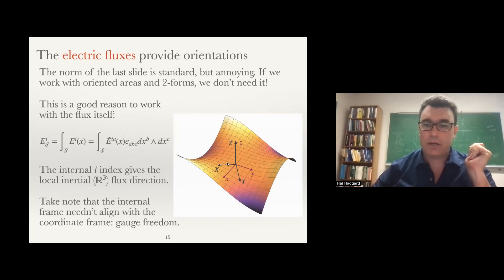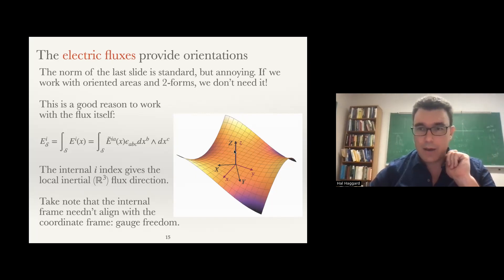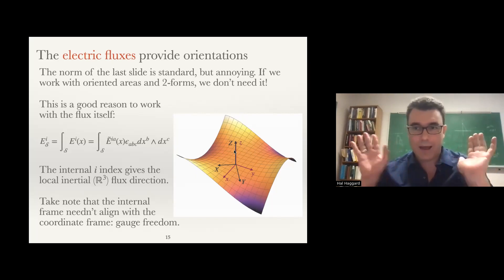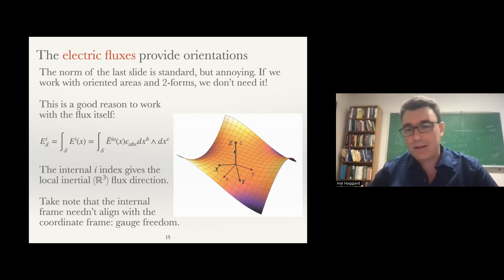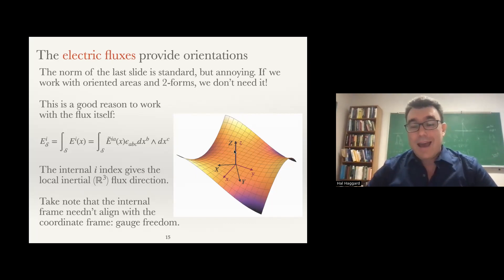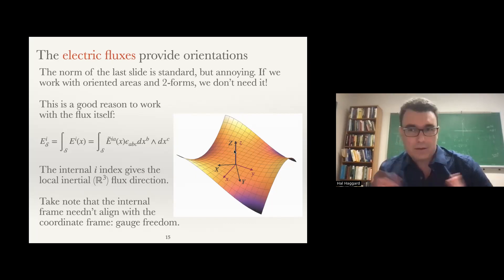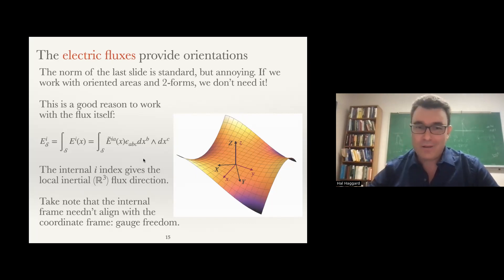The internal frame needn't align with the coordinate frame — they don't have to be the same at all. This is starting to sound like the cat. We have a gauge freedom, which is the gauge freedom of how we orient our local inertial frame with respect to our local coordinate frame. That's an orientation coordinate. The electric field two-form is a bivector — it's a two-form in the local cotangent space.